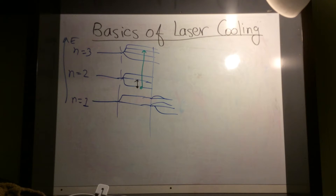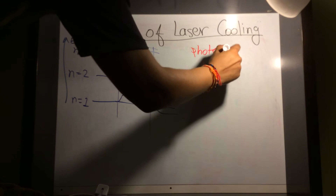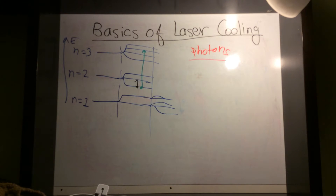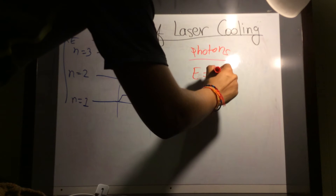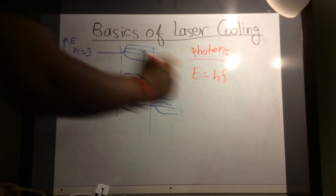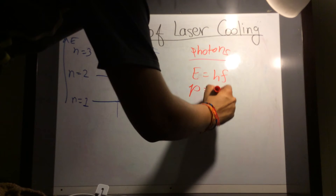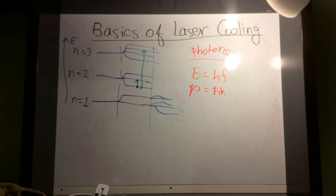Second part: light is made up of photons. Photons are particles of light. Photons carry energy — their energy is hf, where f is the frequency of that light. Photons also carry momentum. The momentum of the photon is h-bar k.